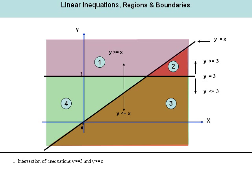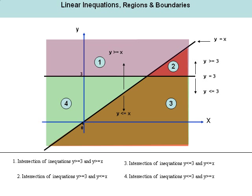Region number two is above the line y equal to 3 but below the line y equal to x. Region number three is below the line y equal to 3 and also below the line y equal to x — where those two regions overlap defines region three. Similarly, region number four is below the line y equal to 3 but above the line y equal to x. That is how we arrive at an overlapping region; this discussion was to explain regions and boundaries.